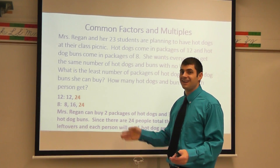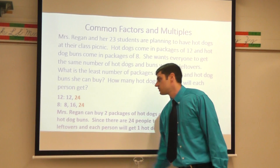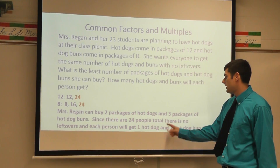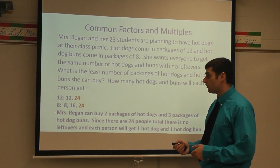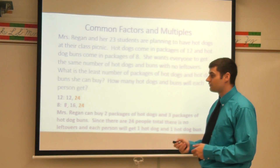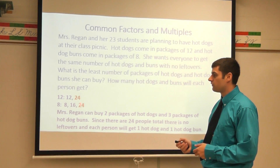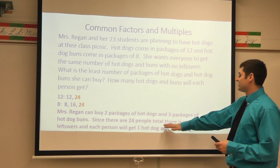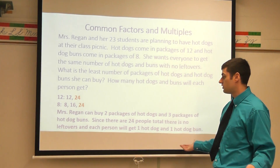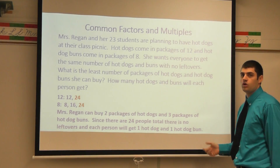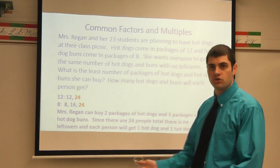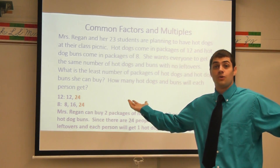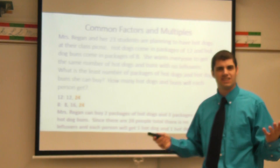The least common multiple is 24, and there are 24 people at this picnic. Mrs. Regan can buy two packages of hot dogs and three packages of hot dog buns. Since there are 24 people total, there are no leftovers and each person gets one hot dog and one hot dog bun. We went to the store, got two packages of hot dogs and three packages of hot dog buns — everyone's happy, no leftovers, and everybody gets one hot dog and one bun.